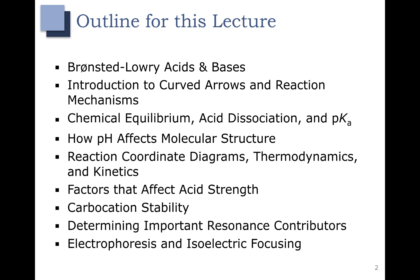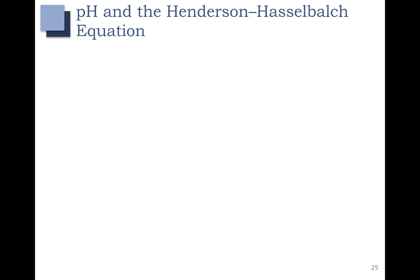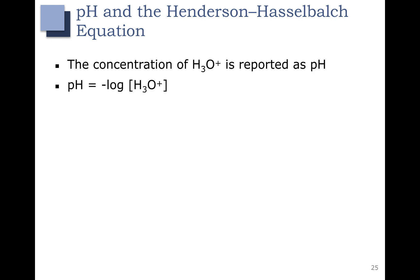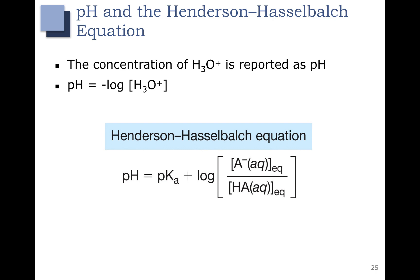In this lecture, we're going to talk about how pH affects molecular structure. First, let's talk about pH and the Henderson-Hasselbalch equation. We report the concentration of H3O+ as pH. You can calculate pH by taking the negative log of the concentration of H3O+ or hydronium. The Henderson-Hasselbalch equation tells us that the pH is equal to pKa plus the log of concentration of A- over concentration of HA.